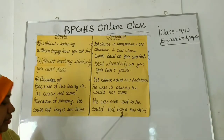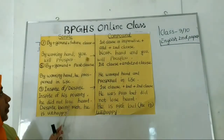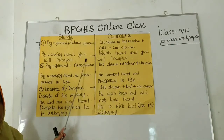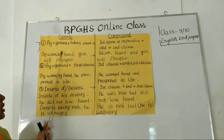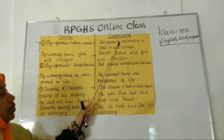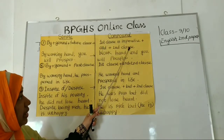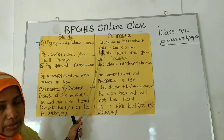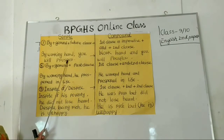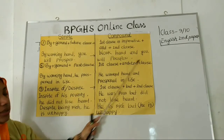Now, rule number seven: by plus gerund plus future clause. If you find by plus verb plus -ing and the next clause in the future tense, you will make it compound by making the first clause an imperative sentence, then using the conjunction and, followed by the second clause. Example: 'By working hard, you will prosper.' The first clause becomes 'Work hard' and the second remains 'you will prosper': 'Work hard and you will prosper.'